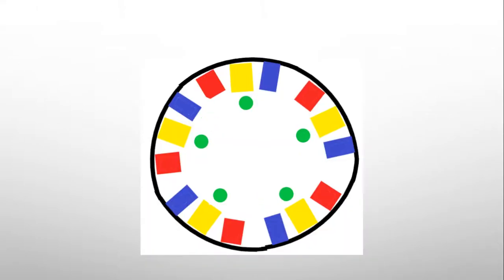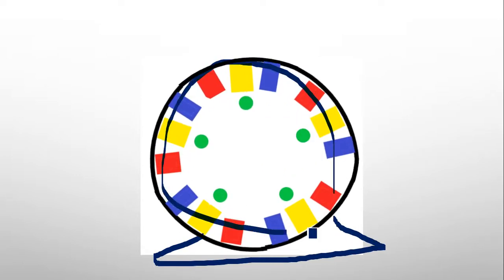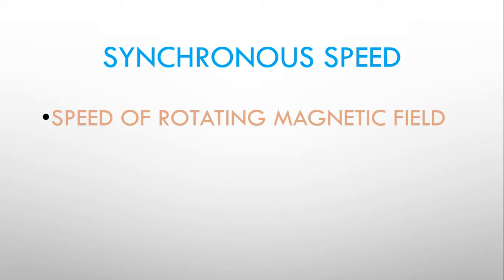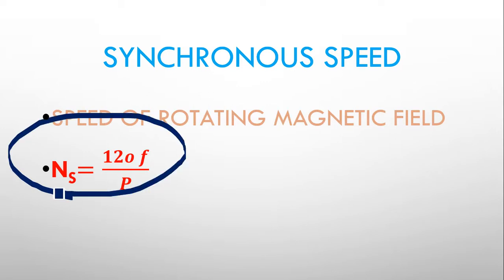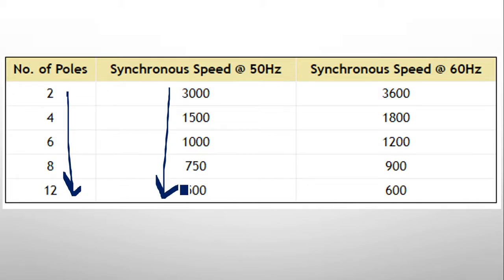Similarly, in a three-phase induction motor there is a revolving magnetic field called the synchronous speed. Its equation is N_s = 120f / P. As the number of poles increases, speed decreases. As frequency increases, speed increases, but normally frequency is fixed at 50 Hz or 60 Hz.